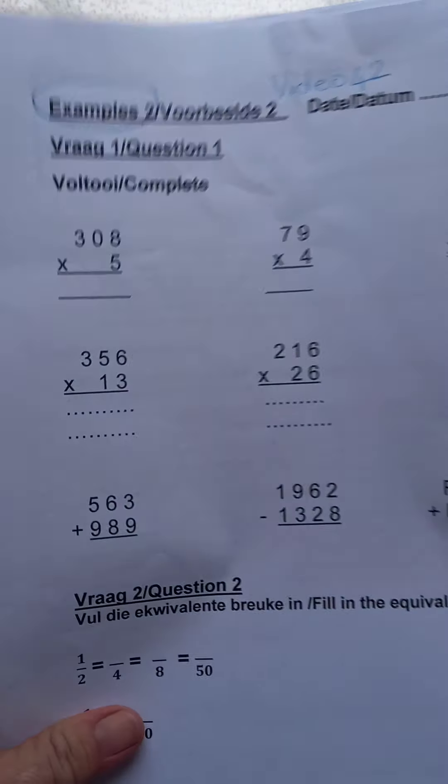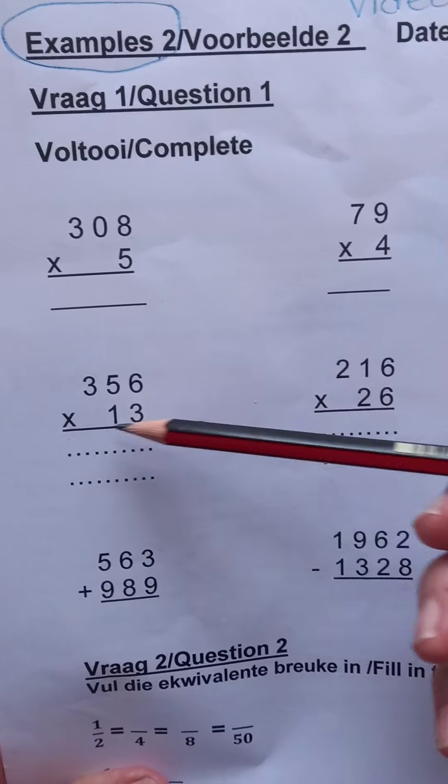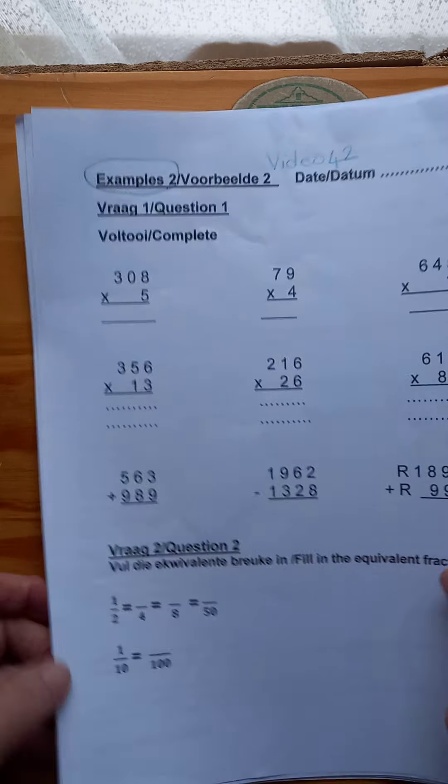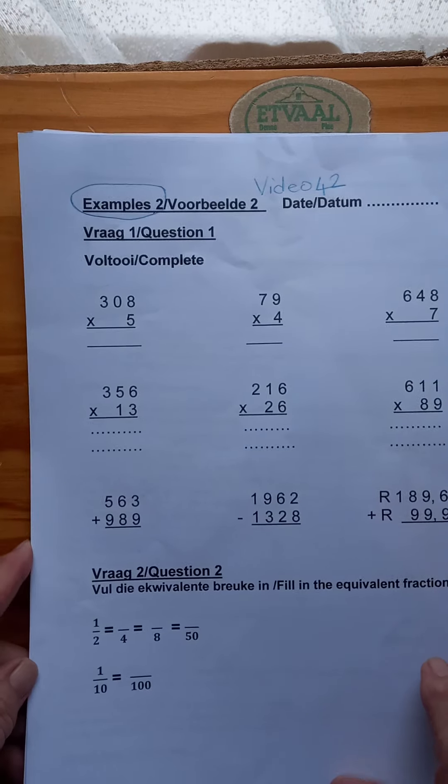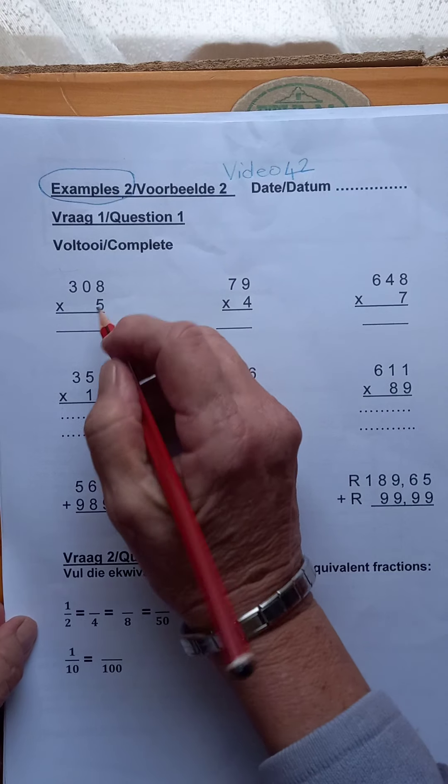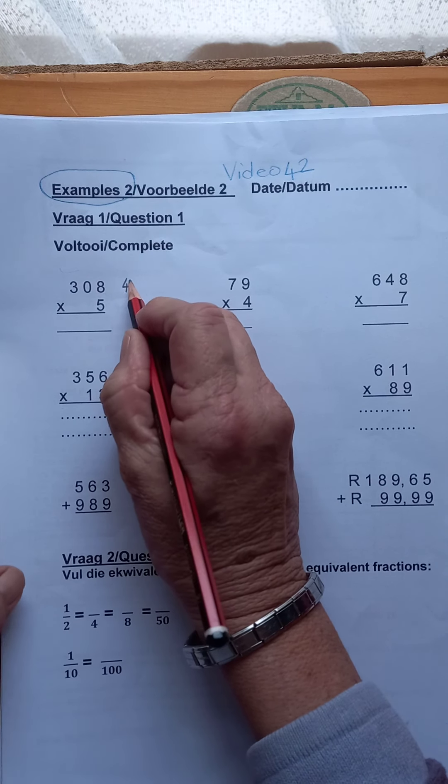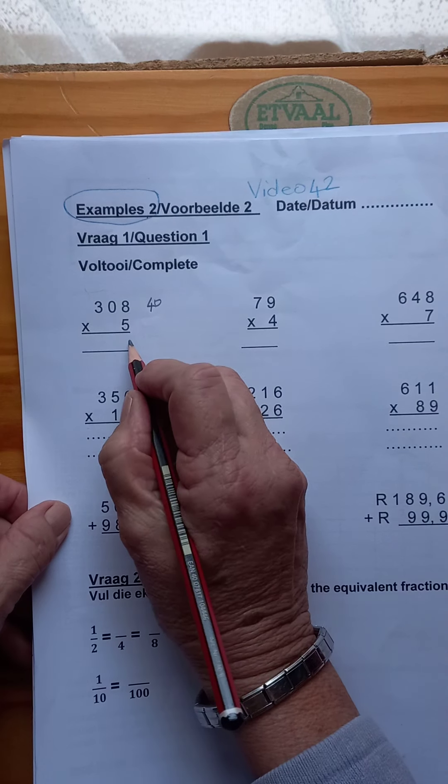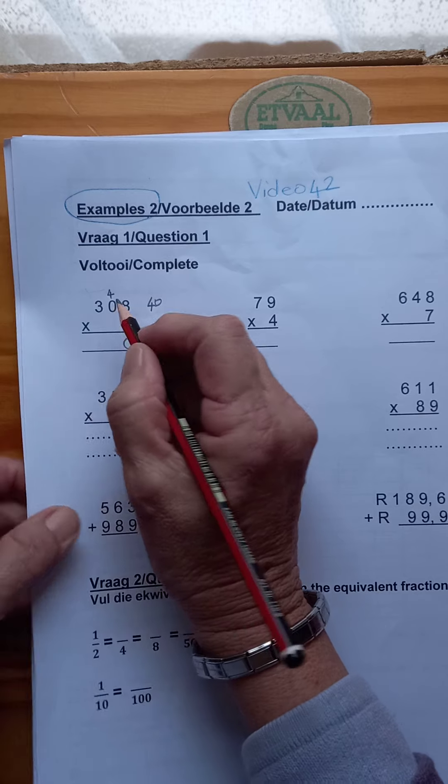I'm going to do the first example of the long multiply and then you can finish the row afterwards on your own. On Monday I will send the memo. Let's see, 5 times 8 is 40. So the 0 is there and the 4 goes over there to the tens.